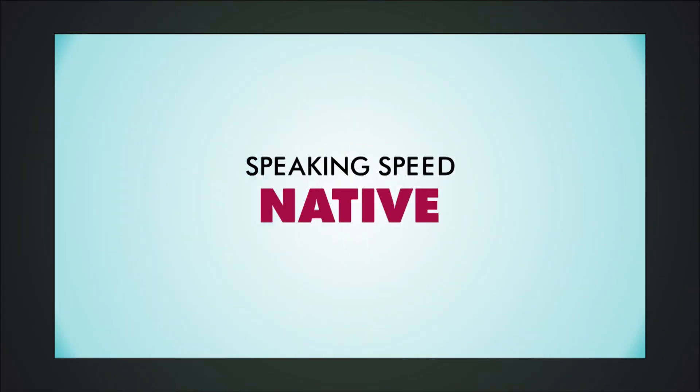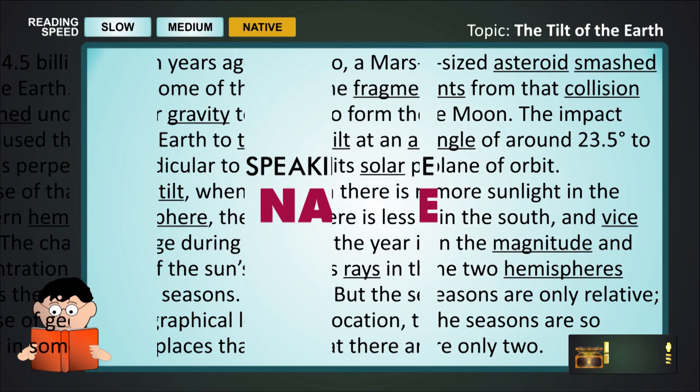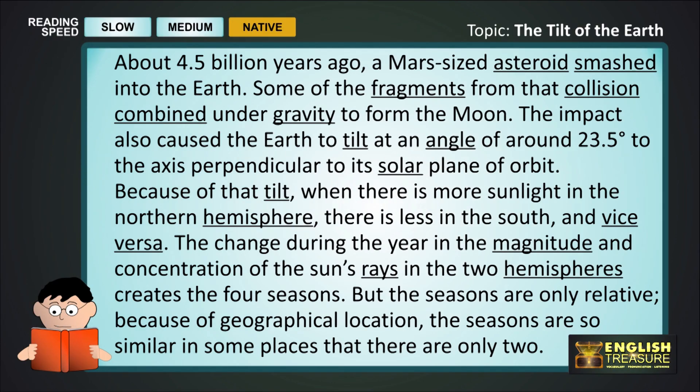We will now say the words again, this time at a native speaker's speed. About 4.5 billion years ago, a Mars-sized asteroid smashed into the earth. Some of the fragments from that collision combined under gravity to form the moon. The impact also caused the earth to tilt at an angle of around 23.5 degrees to the axis perpendicular to its solar plane of orbit.